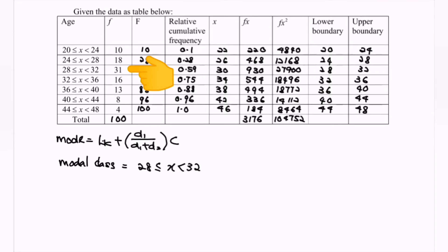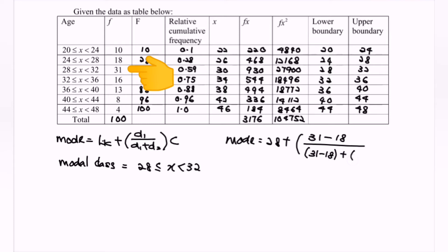For this case, the lower boundary and the lower limit are the same, so where we have 28. So the mode is equal to 28 plus where we have D1, meaning the difference between 31 and the previous class where we have 18, over bracket (31 minus 18) plus D2, meaning 31 minus the following class which is 16. Next, we have the class size. Kindly refer to the lower boundary and upper boundary — for the class 28 to 32, where 32 is not included: 32 minus 28, and we have the class size 4.